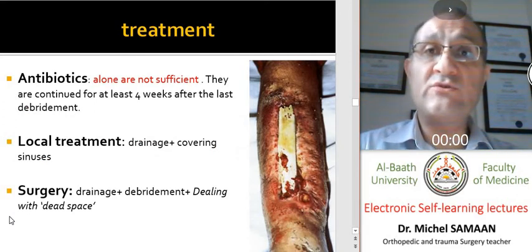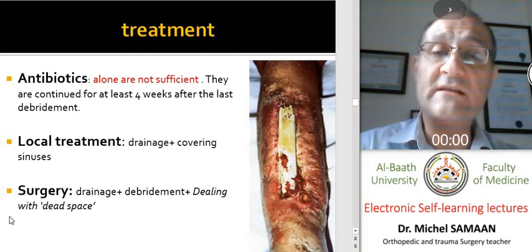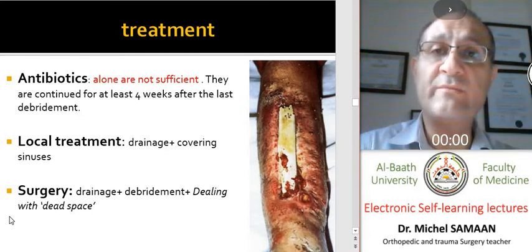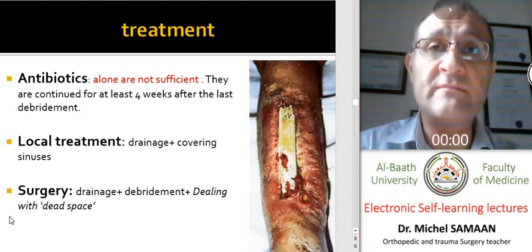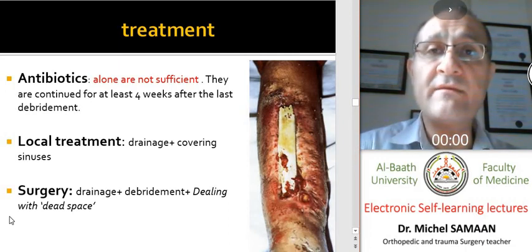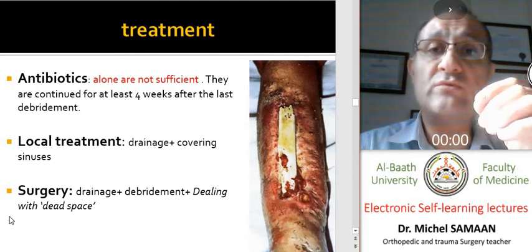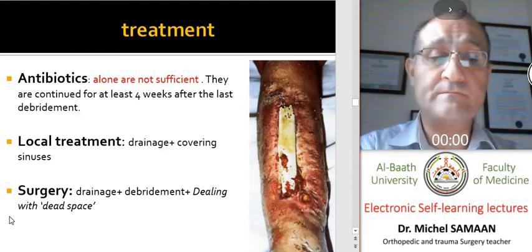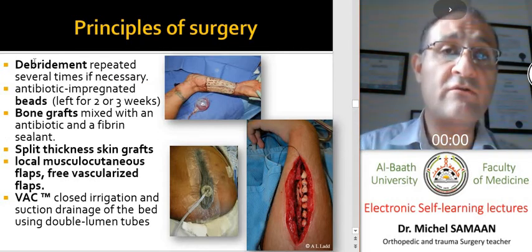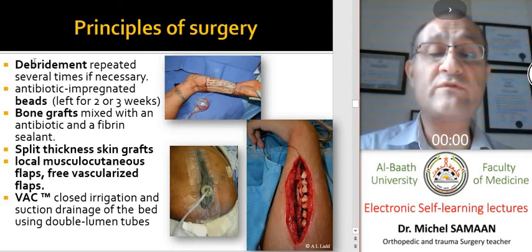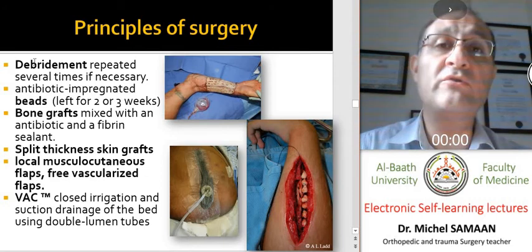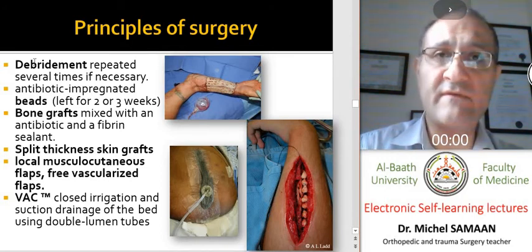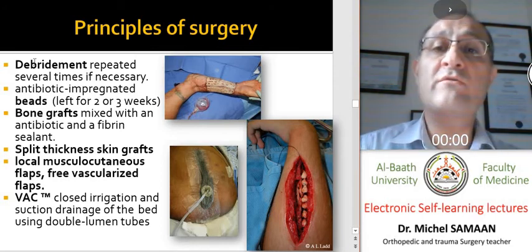Treatment of chronic osteomyelitis does not depend on antibiotics alone — they are not at all sufficient. Abscess drainage alone is also insufficient, unlike in acute osteomyelitis. Aggressive local treatment is required: curetting the area of infection and dead bone, excising the sinuses, and closing the area of skin loss. Repeated debridement is very common, as all dead bone may not be removable in a single procedure.